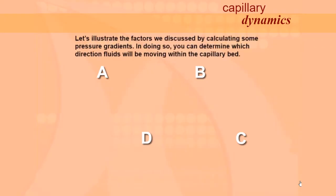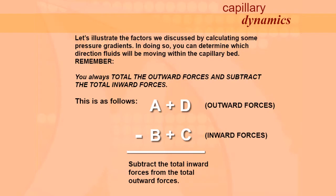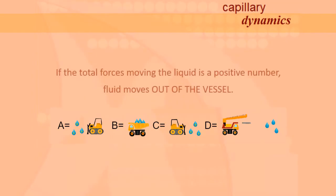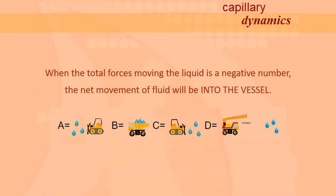Let's illustrate the factors we discussed by calculating some pressure gradients. In doing so, you can determine which direction fluids will be moving within the capillary bed. Remember, you always total the outward forces and subtract the total inward forces. After we subtract the total inward forces from the total outward forces, we can determine the total forces moving the liquid. If the total forces moving the liquid is a positive number, fluid moves out of the vessel. When the total forces moving the liquid is a negative number, the net movement of fluid will be into the vessel.